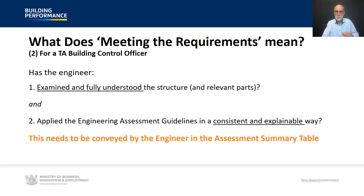Looking at the question through the lens of a TA Building Control Officer, the methodology outlines two key points of reference: firstly, has the engineer examined and fully understood the structure and the relevant parts? And have they applied the engineering assessment guidelines in a consistent and explainable way? In essence, this is conveyed by the engineer via the assessment summary table.